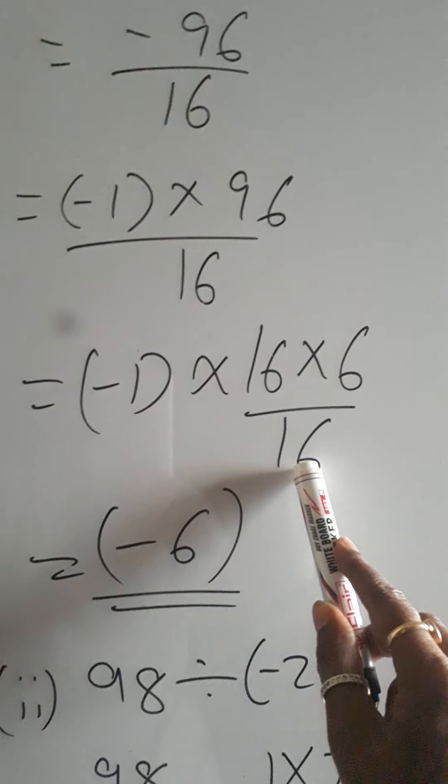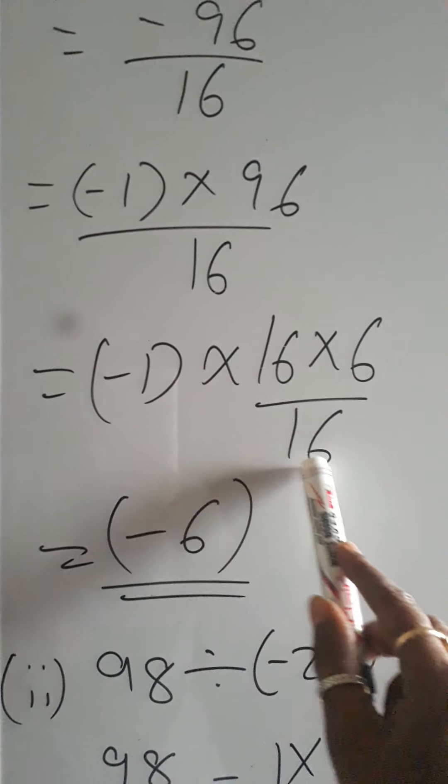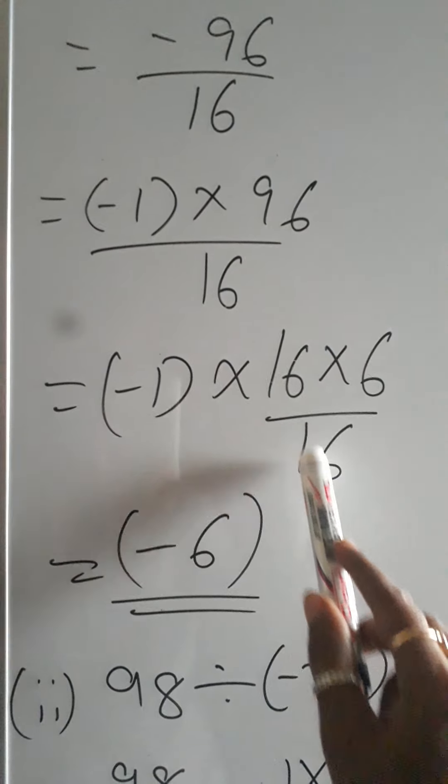Now look at it carefully, 16 divided by 16. 16 divided by 16 can be cancelled, 16 ones are 16.